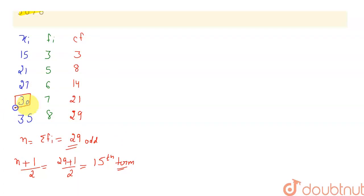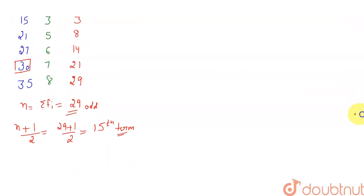Median will be this 30, whose cumulative frequency just greater than 15. So this 30 will be my median. Wait a minute. Let me write here. So my median, let me represent this by capital M, is coming out to be equal to 30.